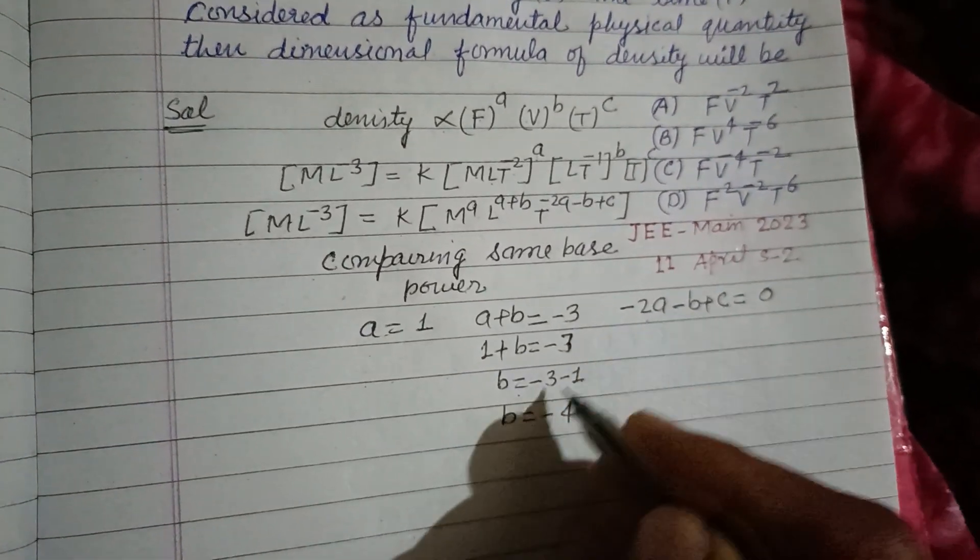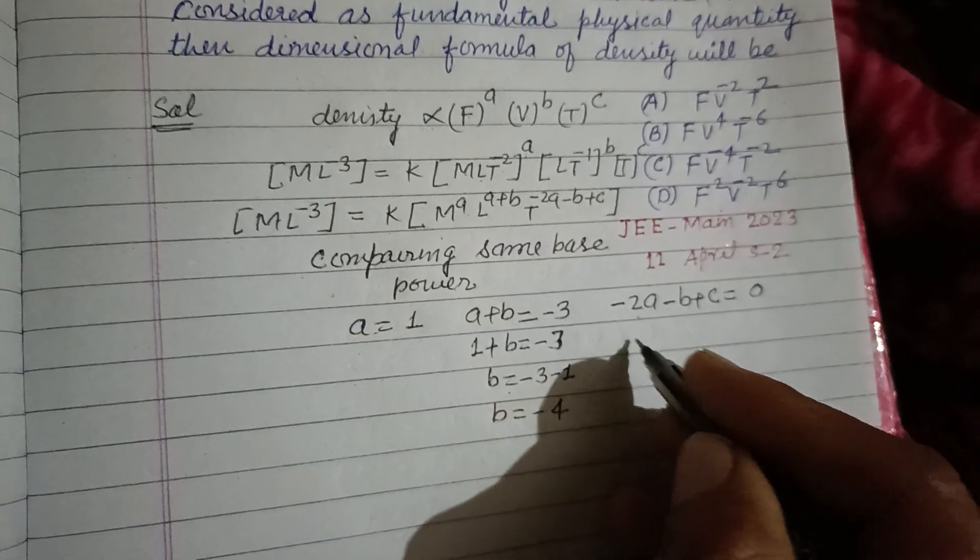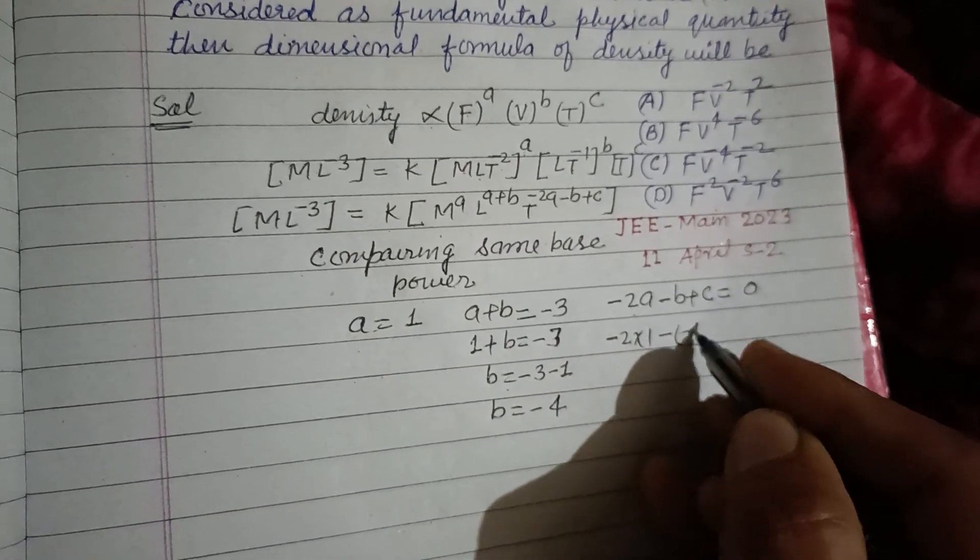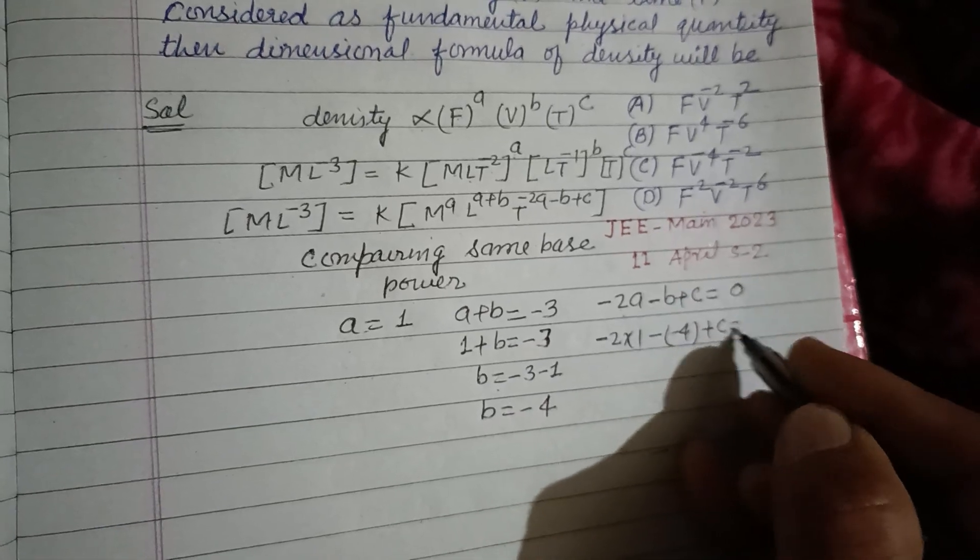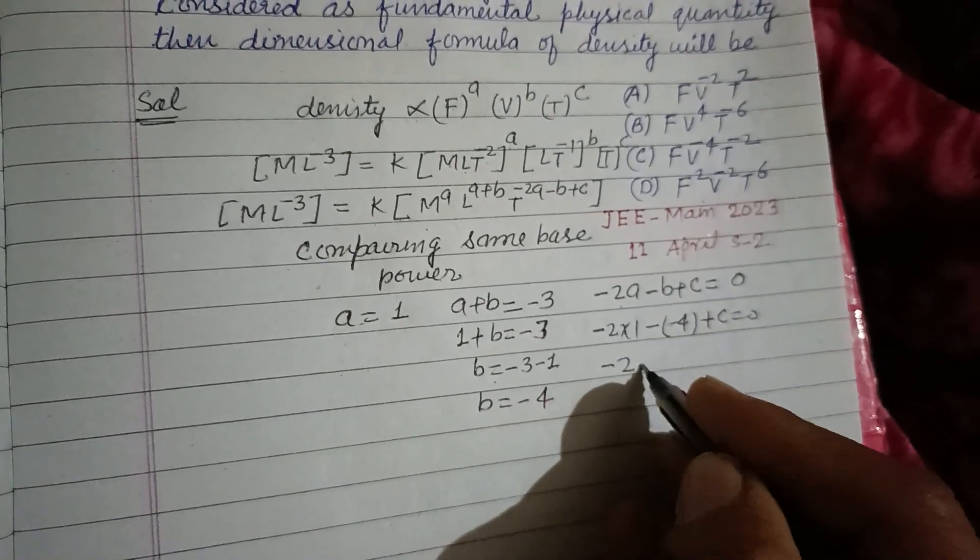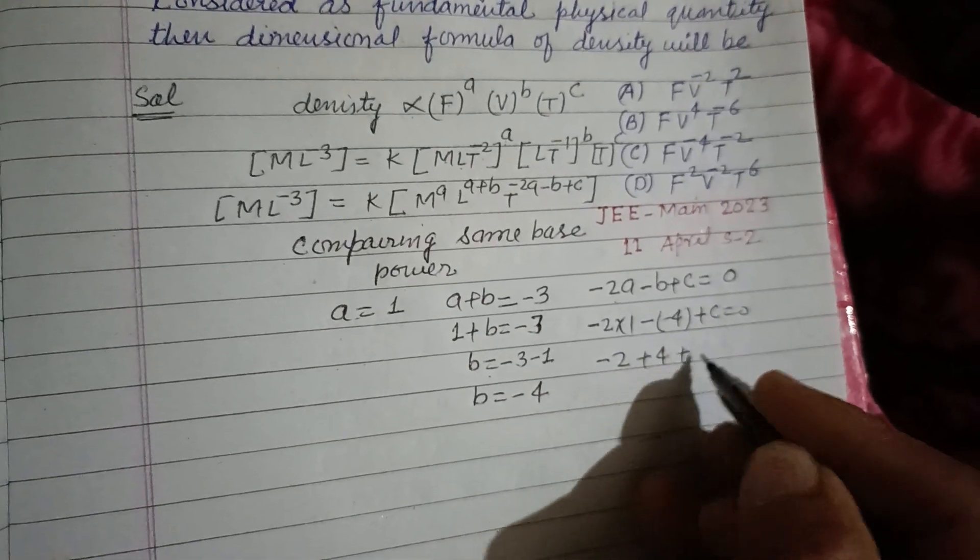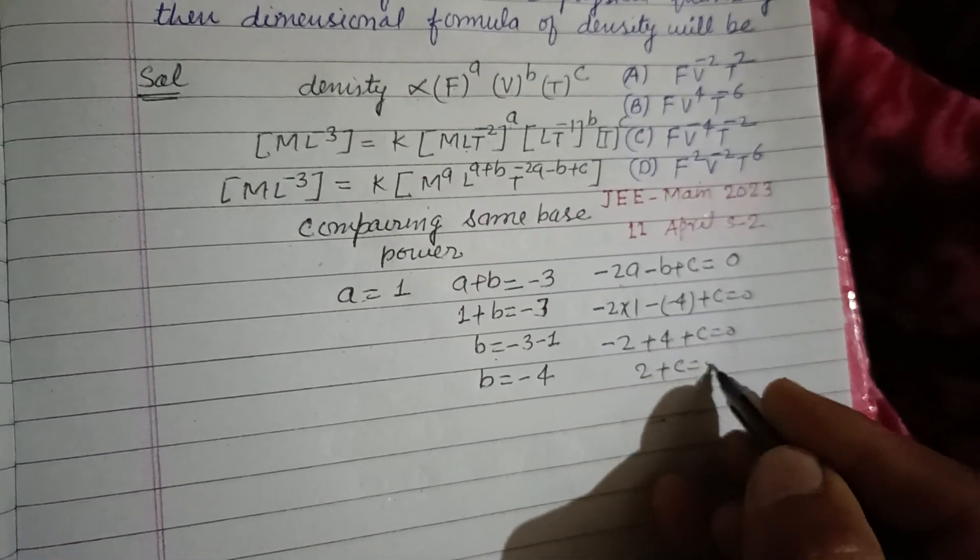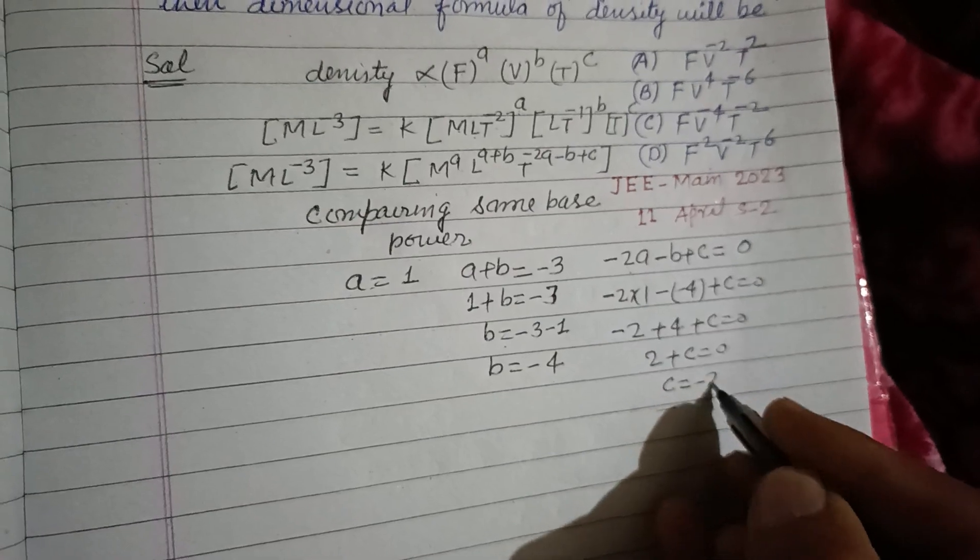Now putting value here of A and B. So 2 into 1 minus B, here it is minus 4 plus C equal to 0. So this is minus 2 plus 4 plus C equal to 0. So this remains 2. 2 plus C equal to 0. C equal to minus 2.